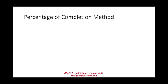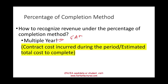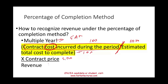Now let's discuss the percentage of completion method. To calculate the percentage completed, take the contract costs incurred during the period and divide by the total estimated cost to complete the project. For example, if you spent $100 and the estimated total cost is $1,000, you are 10% complete. You then multiply that percentage by the contract price to determine the revenue to recognize for the period.